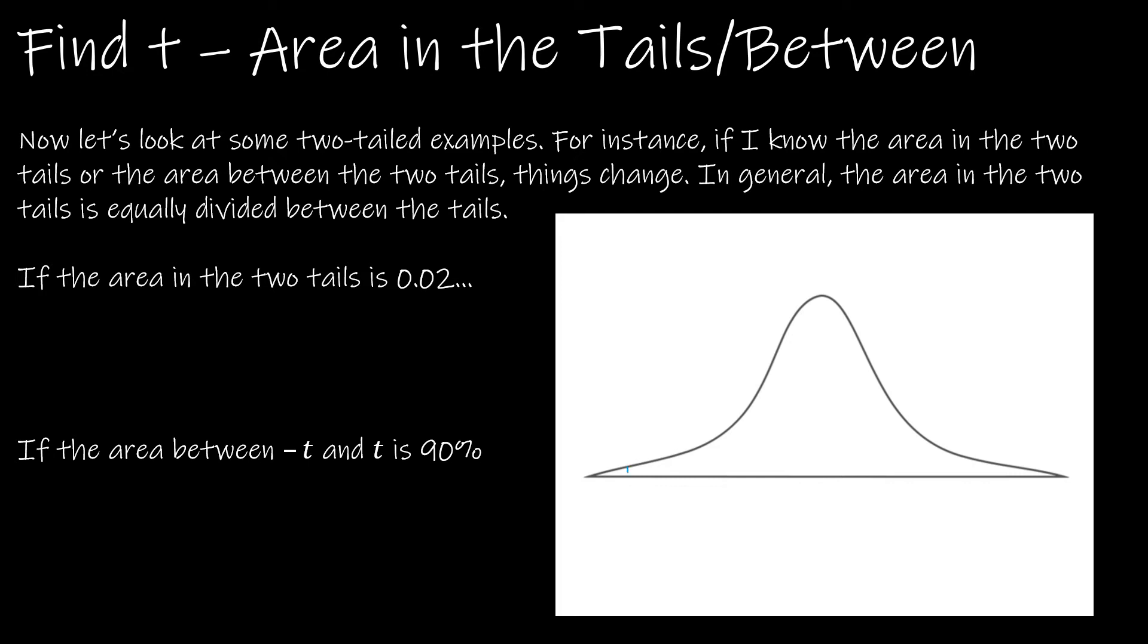If we have the area in both tails total is 0.02, then that means each tail is 0.01 because we would divide it by two to see that this area is 0.01 and this area is 0.01, and there's 98% in between.